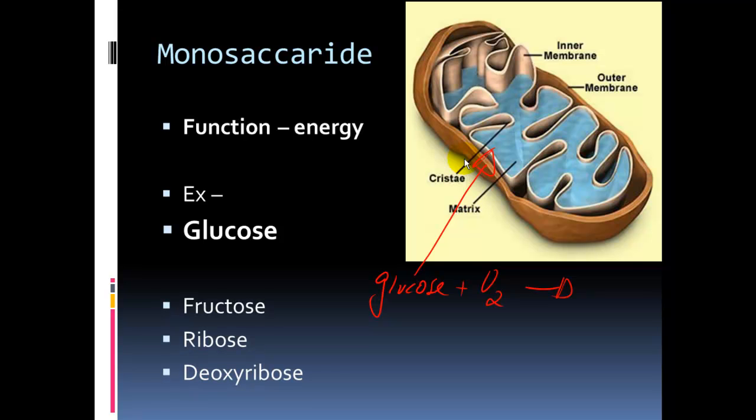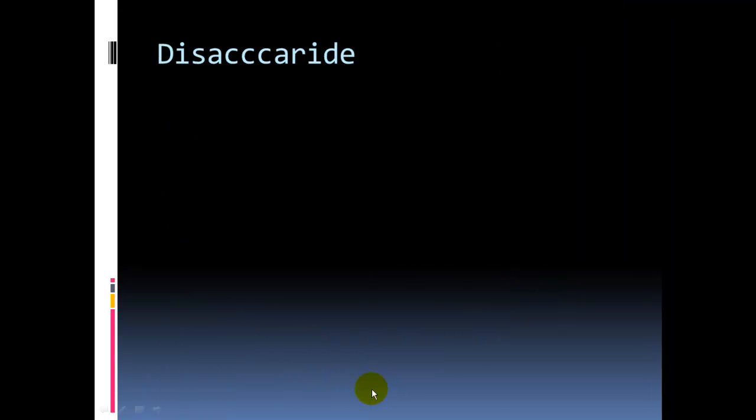Some other monosaccharides, fructose, we won't meet that much, but ribose and deoxyribose, these are going to be monosaccharides that we find in RNA and in DNA.